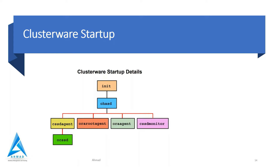Another important process is ora root agent. This process helps the CRSD start and manage resources that are owned by root, such as network and Grid Virtual IP addresses, etc. That is the work of ora root agent.